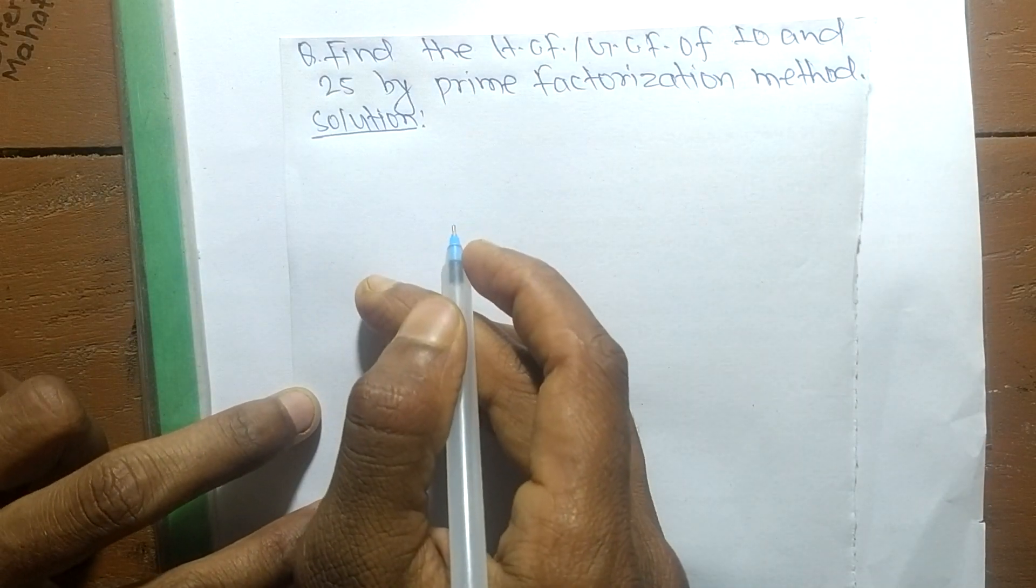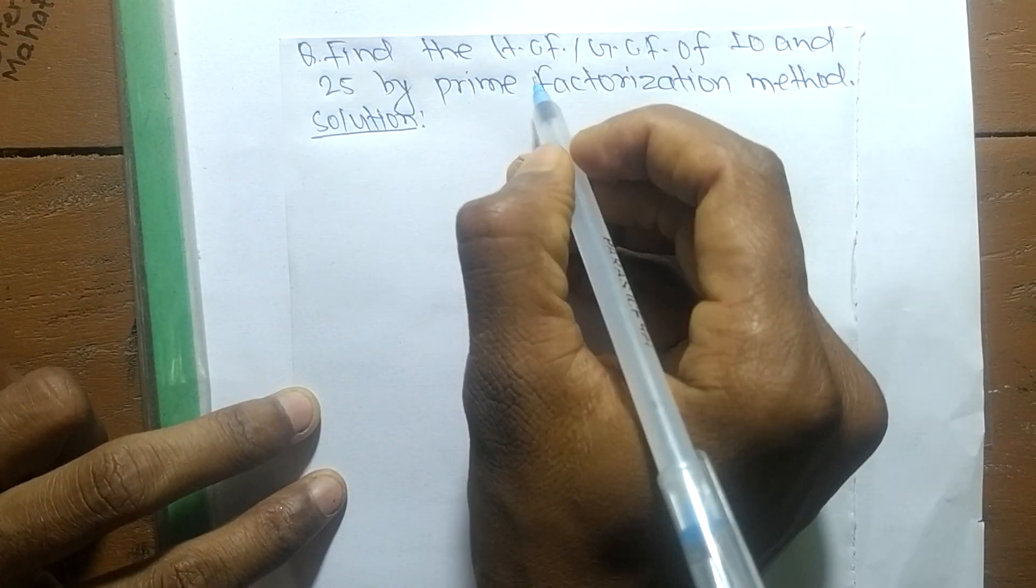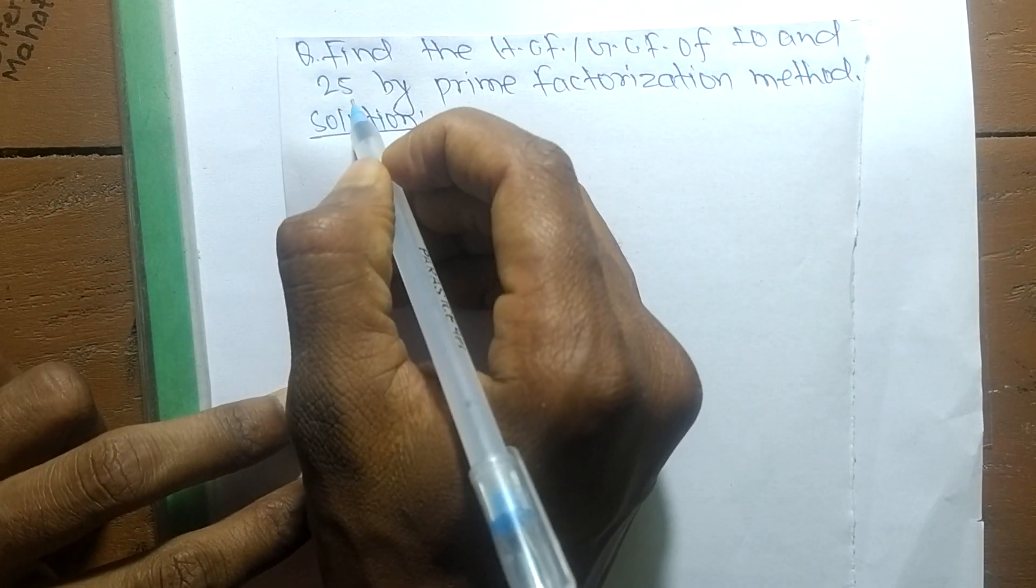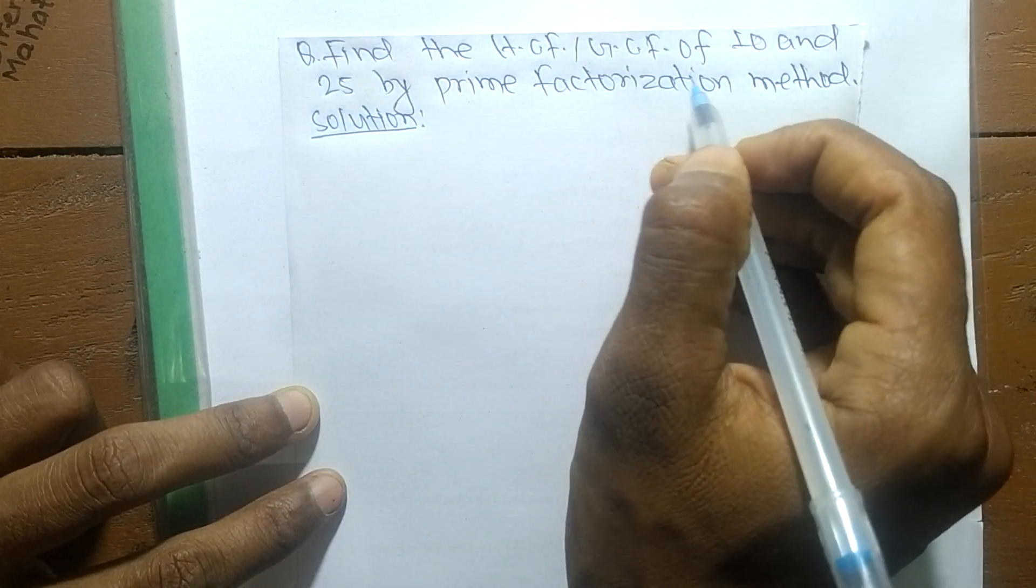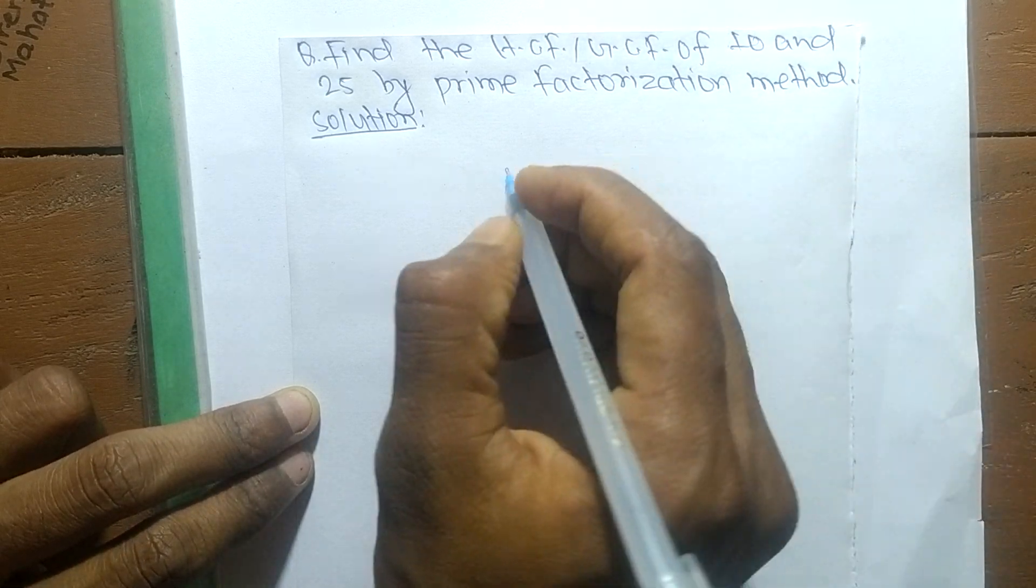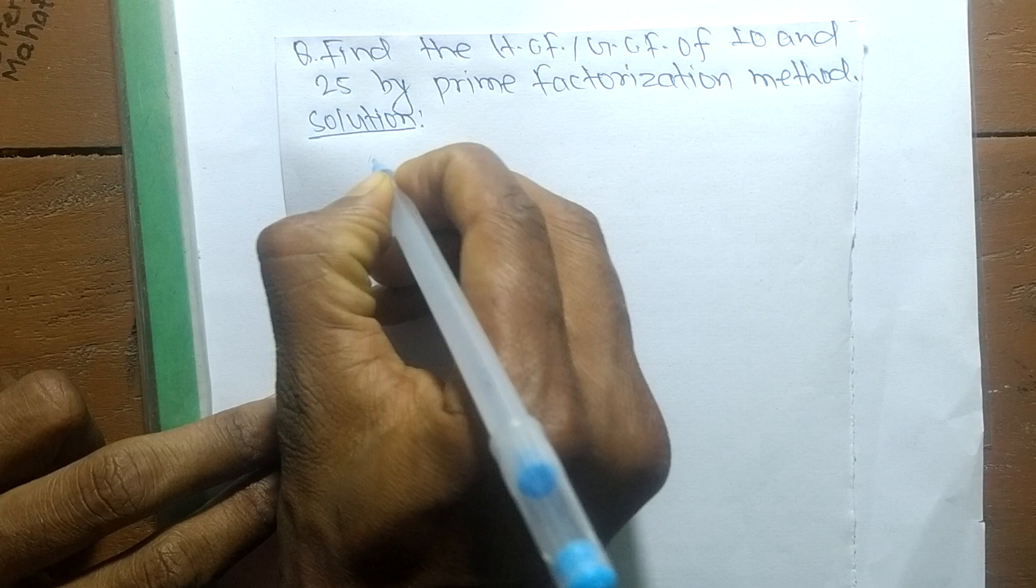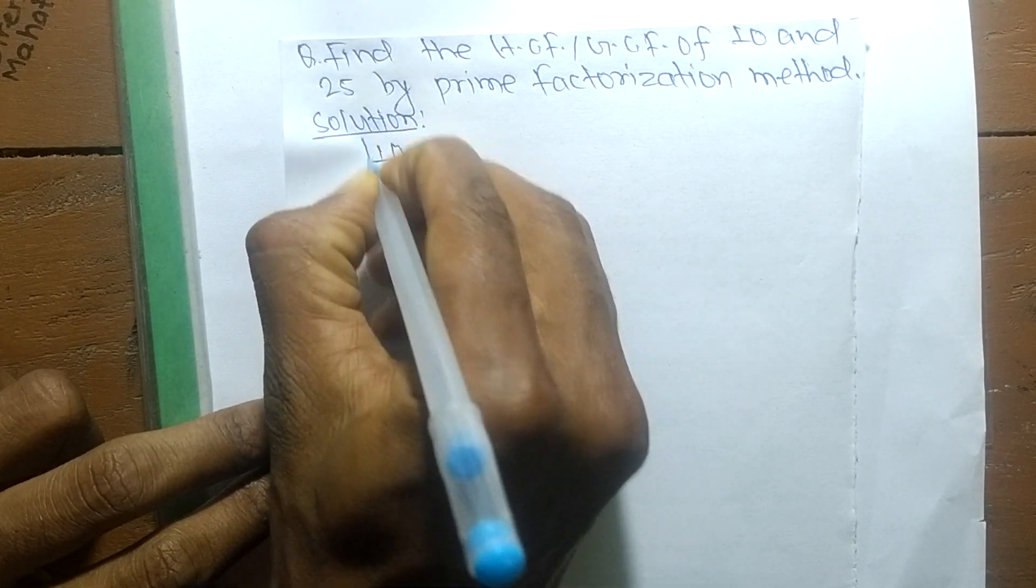So today in this video we shall learn to find the GCF or HCF of 10 and 25 by prime factorization method. So first we find out the prime factors of 10 and 25.